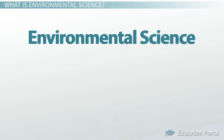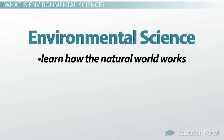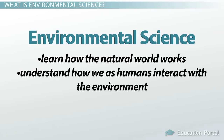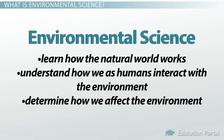The field of environmental science can be divided into three main goals, which are to learn how the natural world works, to understand how we as humans interact with the environment, and also to determine how we affect the environment.